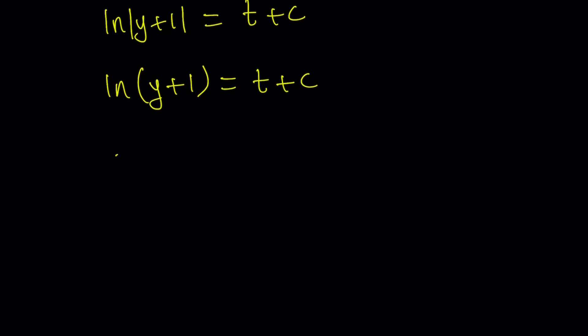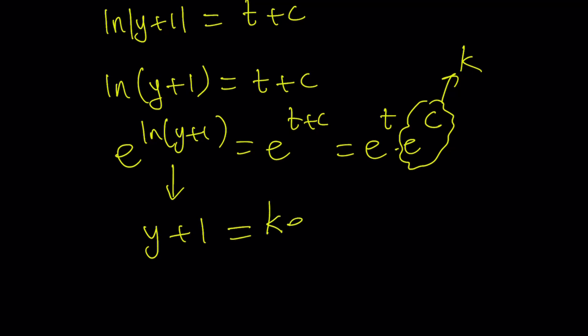Let's do e to the power of both sides. e to the power ln y plus one equals e to the power t plus c, which can be written as e to the power t times e to the power c. But guess what? c is a constant. Therefore, e to the power c is also a constant. So I can call it k. Now this becomes e to the power ln y plus one. Now e to the power ln something is something. So this becomes y plus one. And the right hand side can be written as k times e to the power t. Awesome.